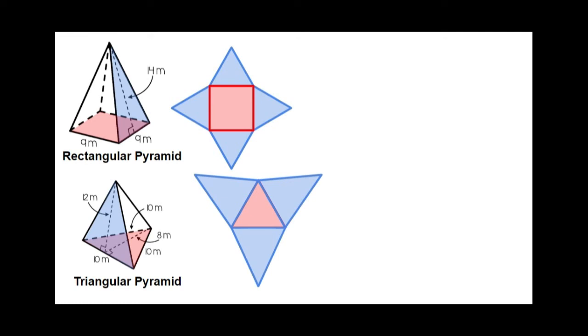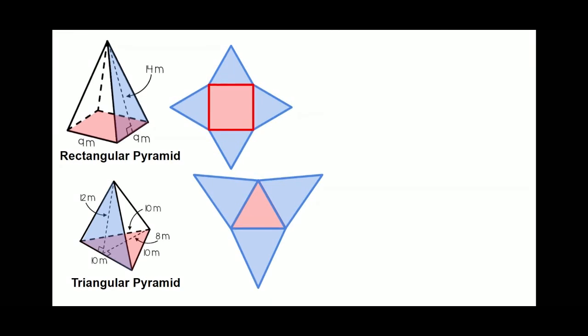Again these aren't the only type of pyramids. That's right you can use lots of different shapes to form the base of a pyramid. You can use a five-sided pentagon to form a pentagonal pyramid. You can use a six-sided hexagon to form a hexagonal pyramid.